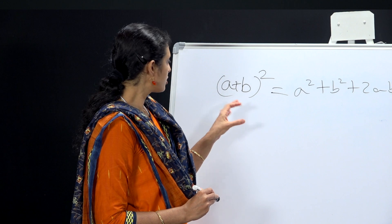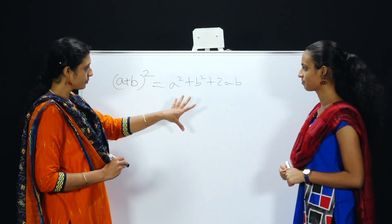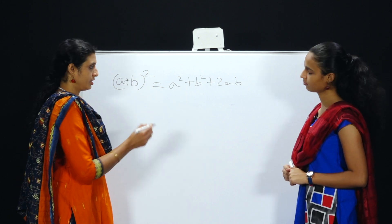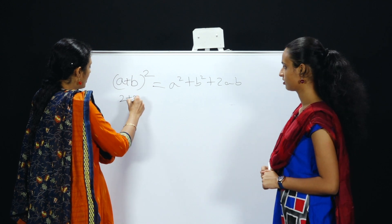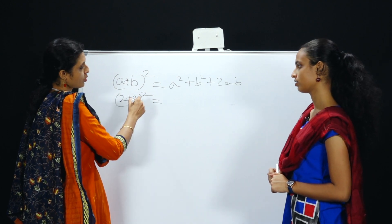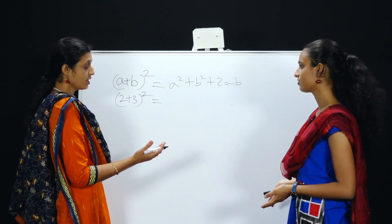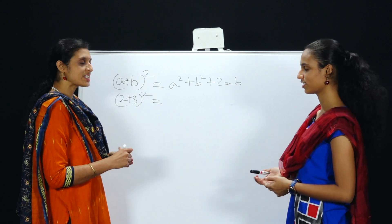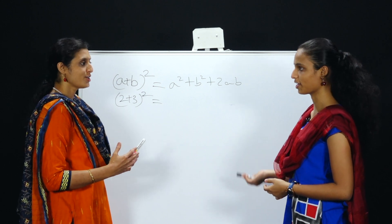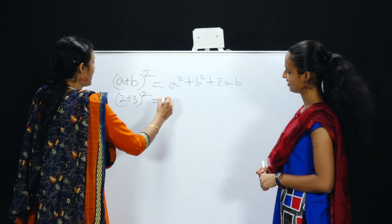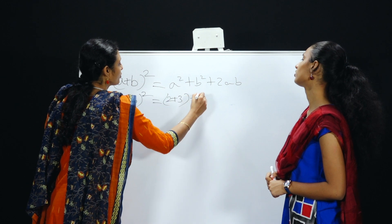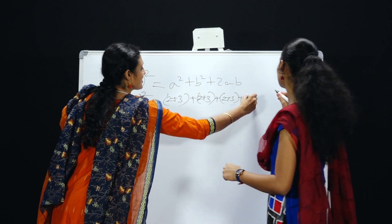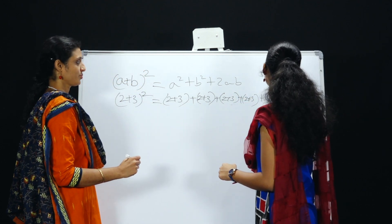We take small numbers, put them in and execute them. Suppose we take the numbers 2 and 3 — 2 plus 3 whole square. So what is 2 plus 3 whole square? 5 square. 5 square means — the idea of multiplication is repeated addition — so 5 square means adding 5 for 5 times. So this side will be like 2 plus 3 executing for 5 times: 2+3, 2+3, 2+3, 2+3, 2+3.